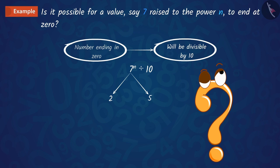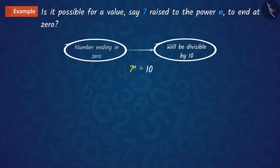Is it possible? No, this is not possible because if we look at the prime factorization of 7, we get only 1 and 7.